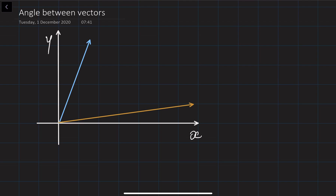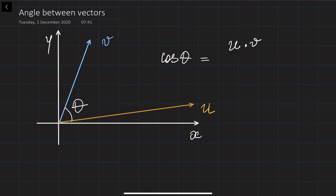So let's say you're given two vectors u and v, and you would like to find the angle between these two vectors — let's denote this as theta. We can find this using the following equation: the cosine of angle theta between the two vectors u and v can be found by taking the dot product u·v divided by the product of the lengths of these two vectors, the norm of u and the norm of v.